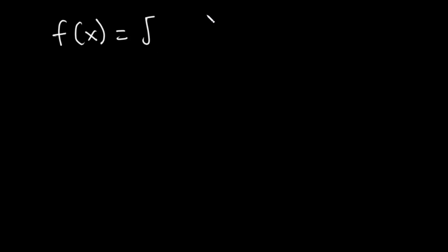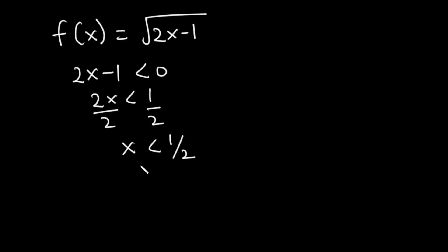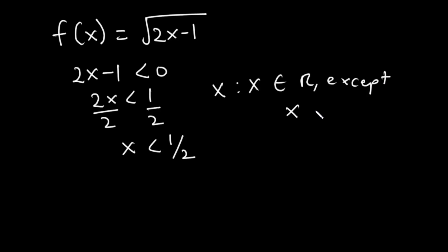There is an alternative approach. For f of x equal to the square root of 2x minus 1, we can set what's inside to be less than zero: 2x minus 1 is less than zero, giving 2x less than 1, so x is less than 1 over 2. This means any value of x less than 1 over 2 makes the function undefined. So the domain is x is such that x is the set of all real numbers except x is less than 1 over 2 — meaning x must be greater or equal to 1 over 2.